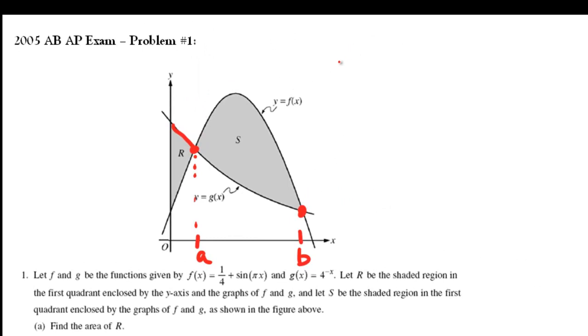For the first part, we can see that the area is going to be equal to the integral from 0 to A of our top function minus the bottom function, which would be G(x) minus F(x) dx.